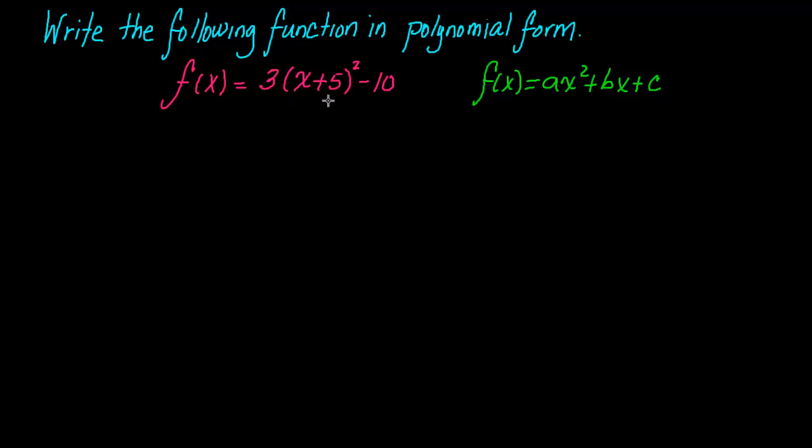And we want to change this format to look like this format, which is the polynomial form. And what that is is when we have a quadratic function written in descending order of degrees. So it starts off at x squared, and then x, and then c.